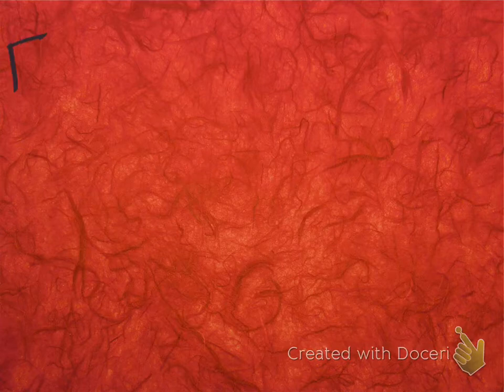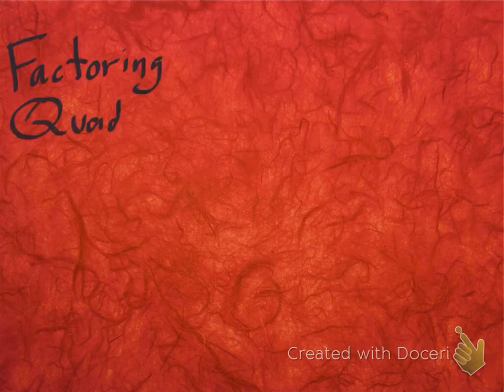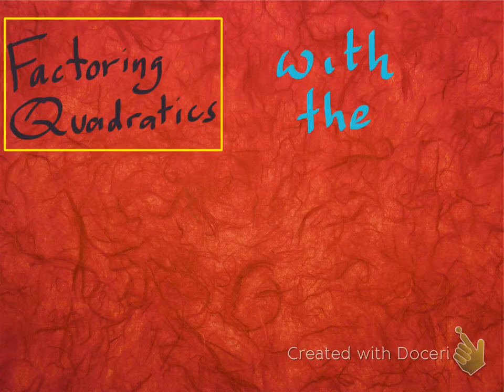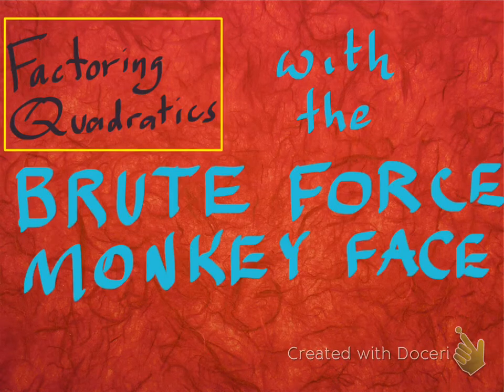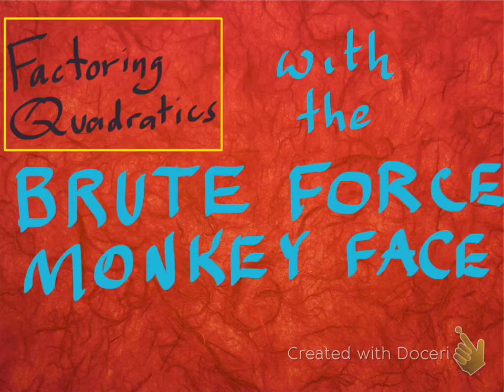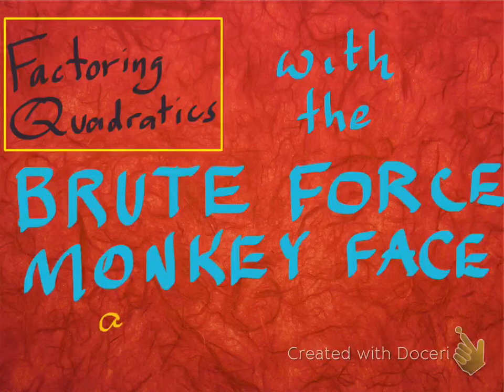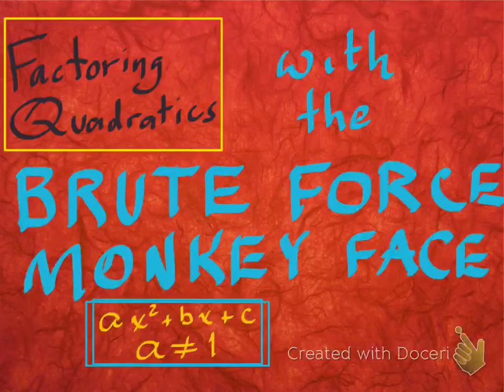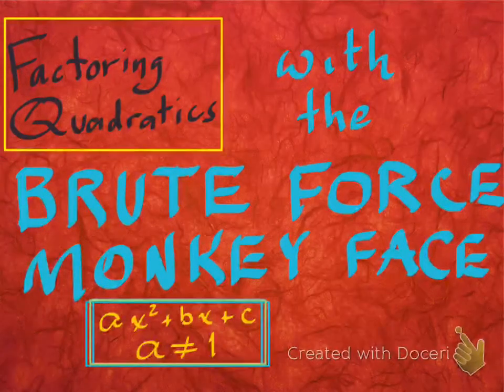Hello there, everybody. Thanks for checking into my little video here. I hope you're doing well. We're going to talk about factoring quadratics with something I'm calling the brute force monkey face method. We're going to factor standard form quadratic trinomials where a does not equal one.